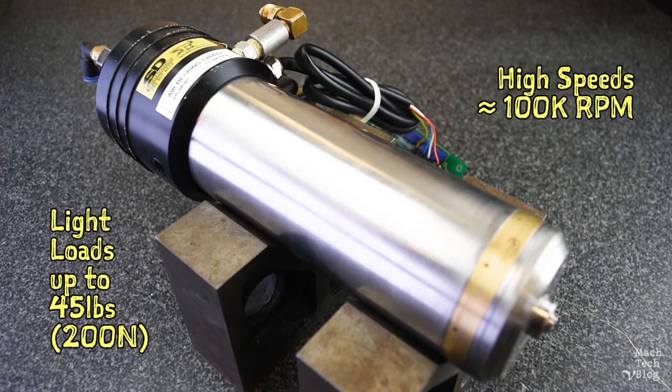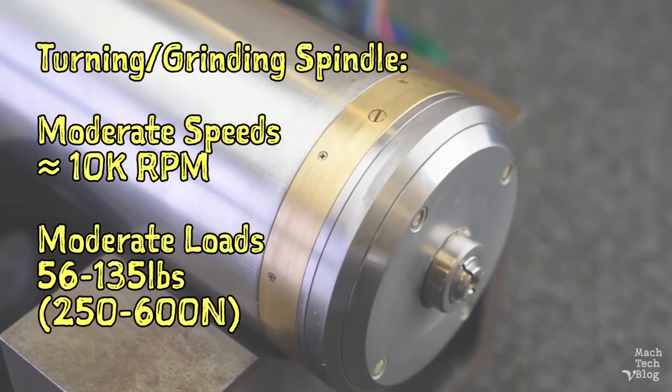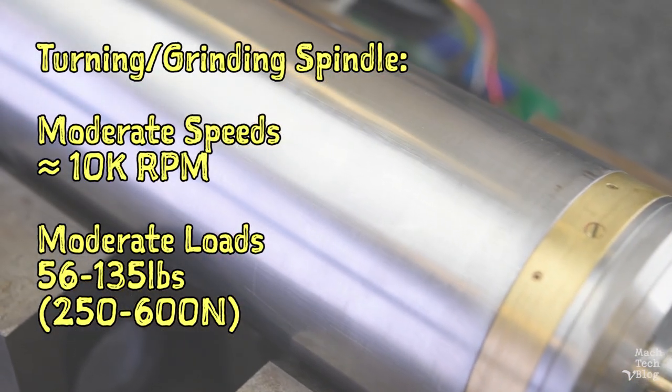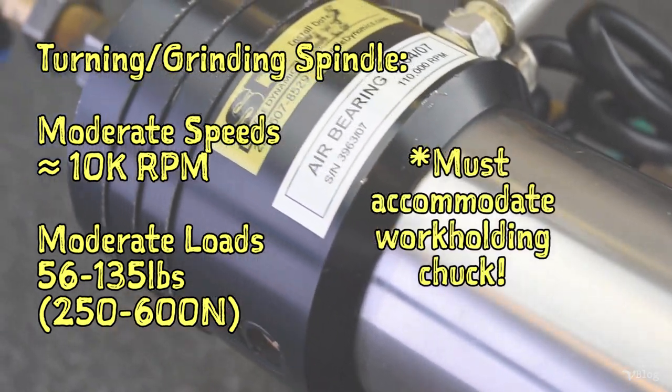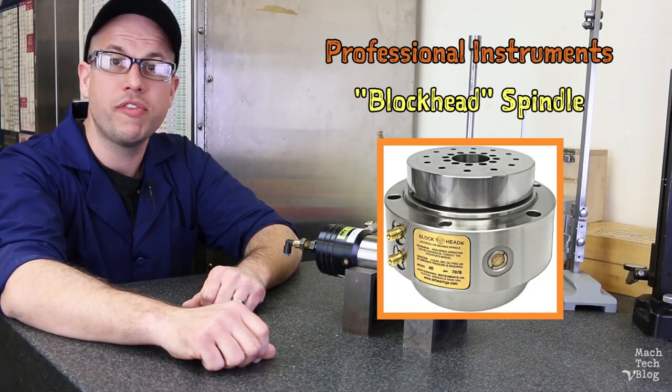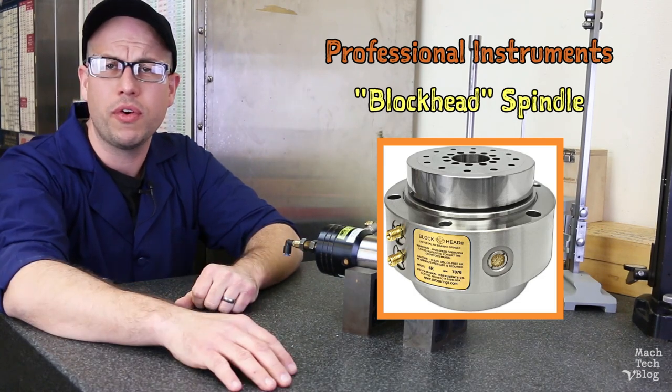So, they're designed for high speeds and light loads, and they work with small collet systems. An appropriate spindle for our application would be designed for moderate speeds and loads, and you would need to mount a chuck on it. One good option is the Professional Instruments blockhead spindle, but even a used unit goes for around $1,000.